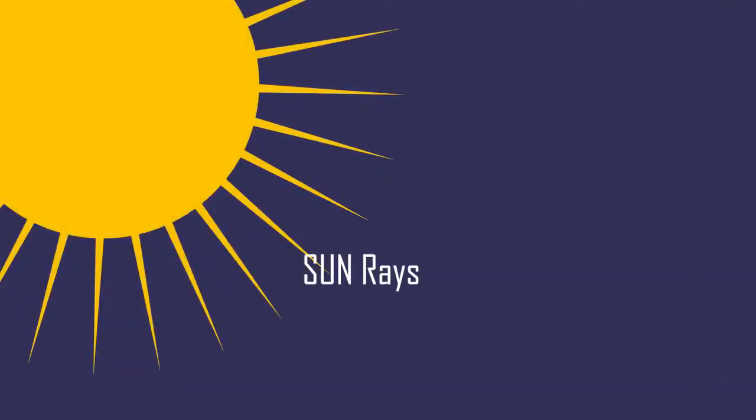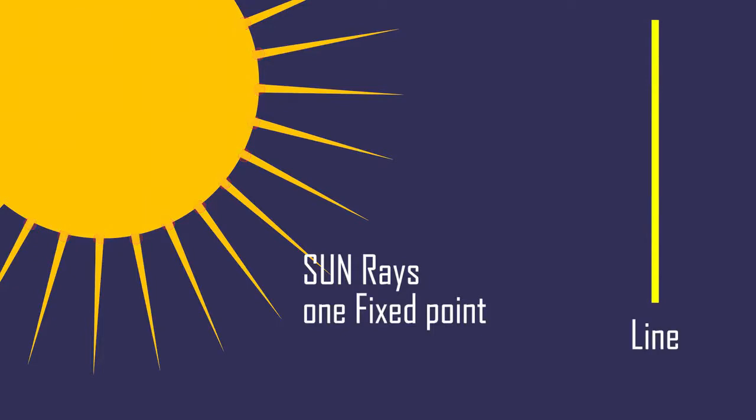Have you ever thought why we say sunrays and not sunline? Is ray different from a line? Yes, it is. A ray has one fixed point and it cannot go in both directions like a line. For sunrays, the sun is a fixed point, and thus we say light coming as sunrays.